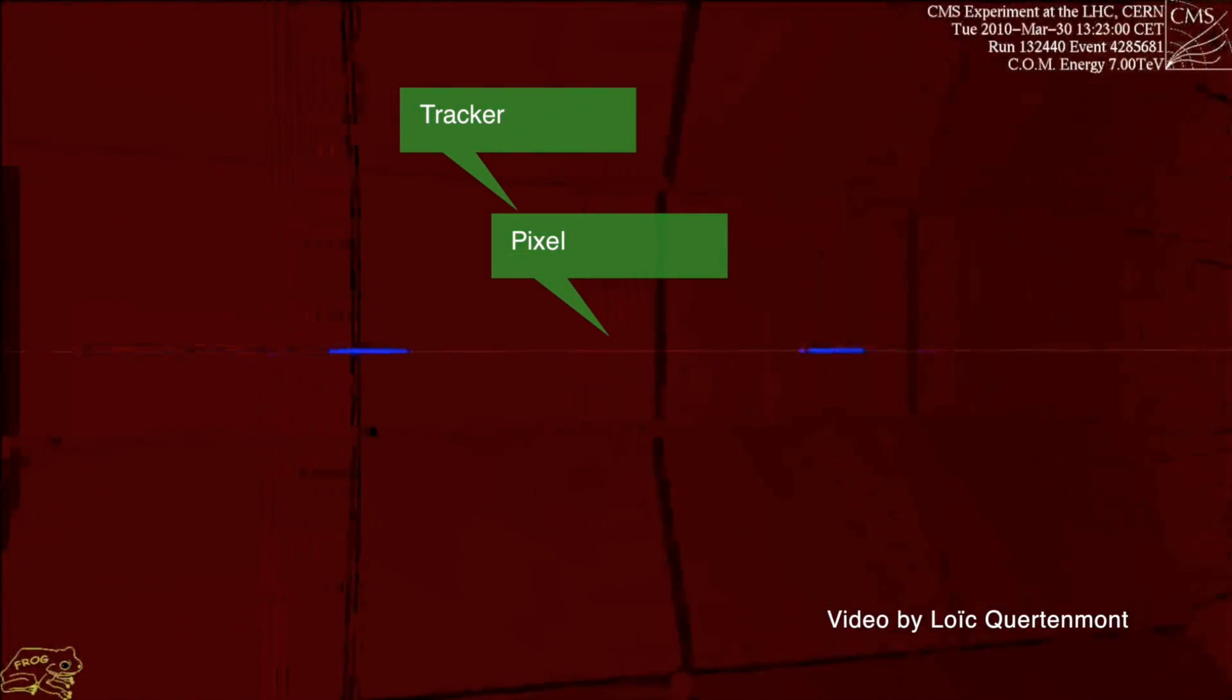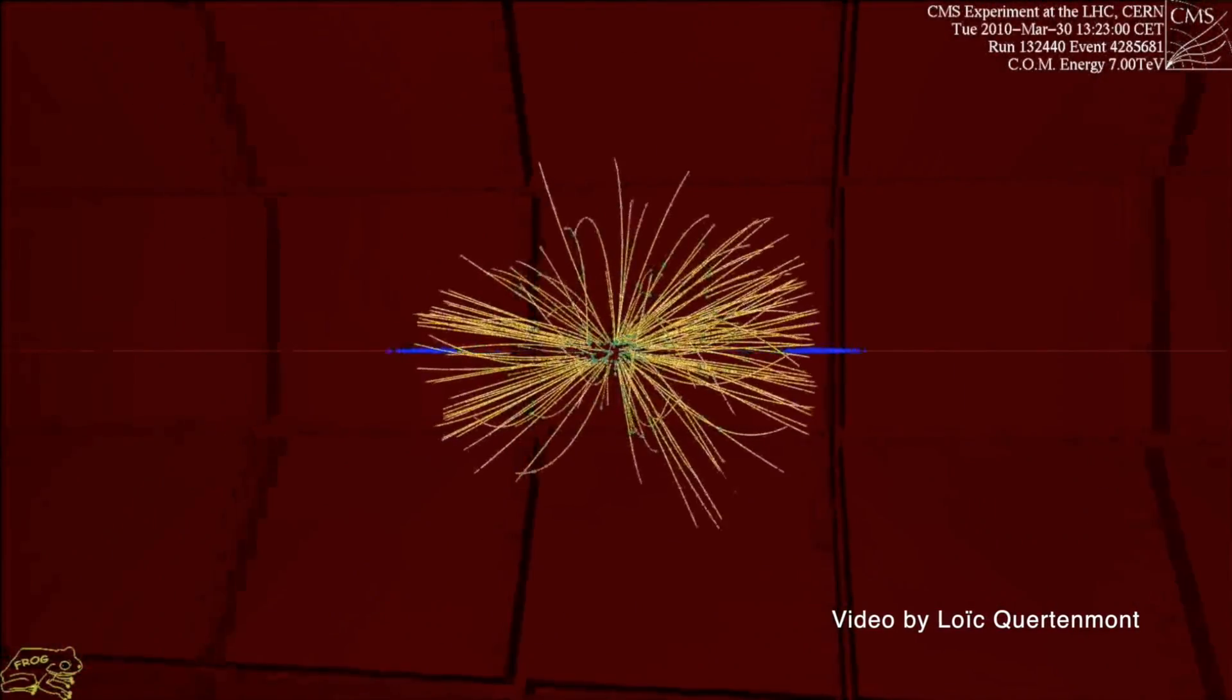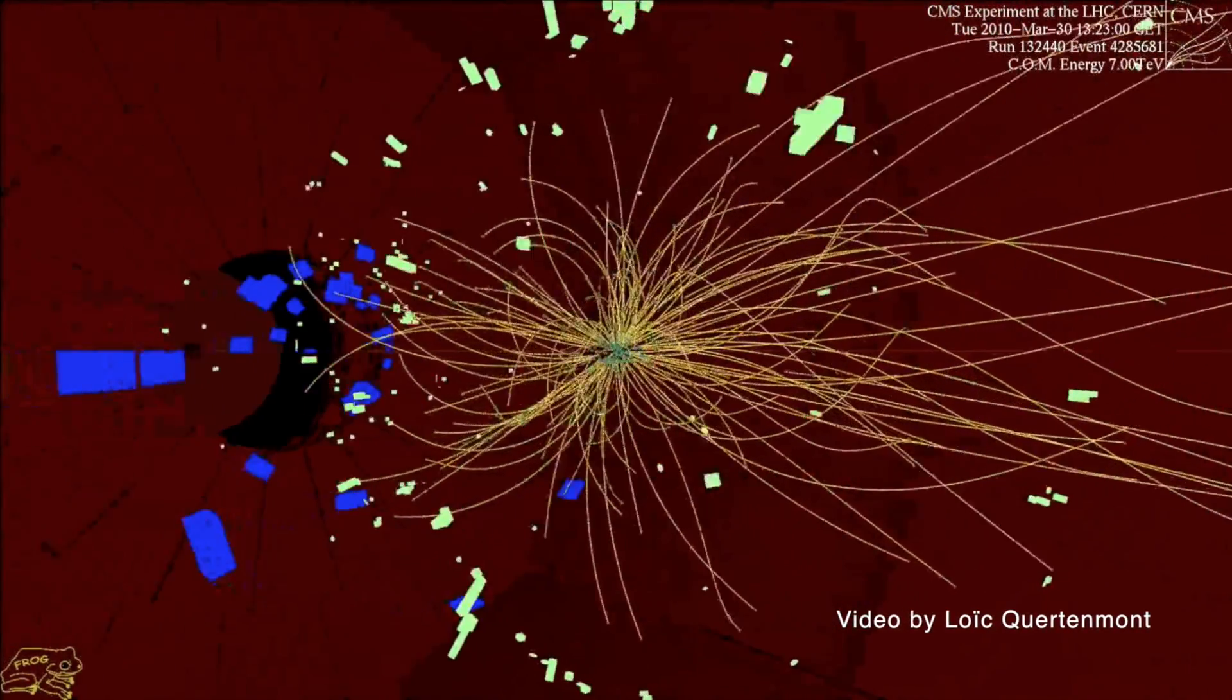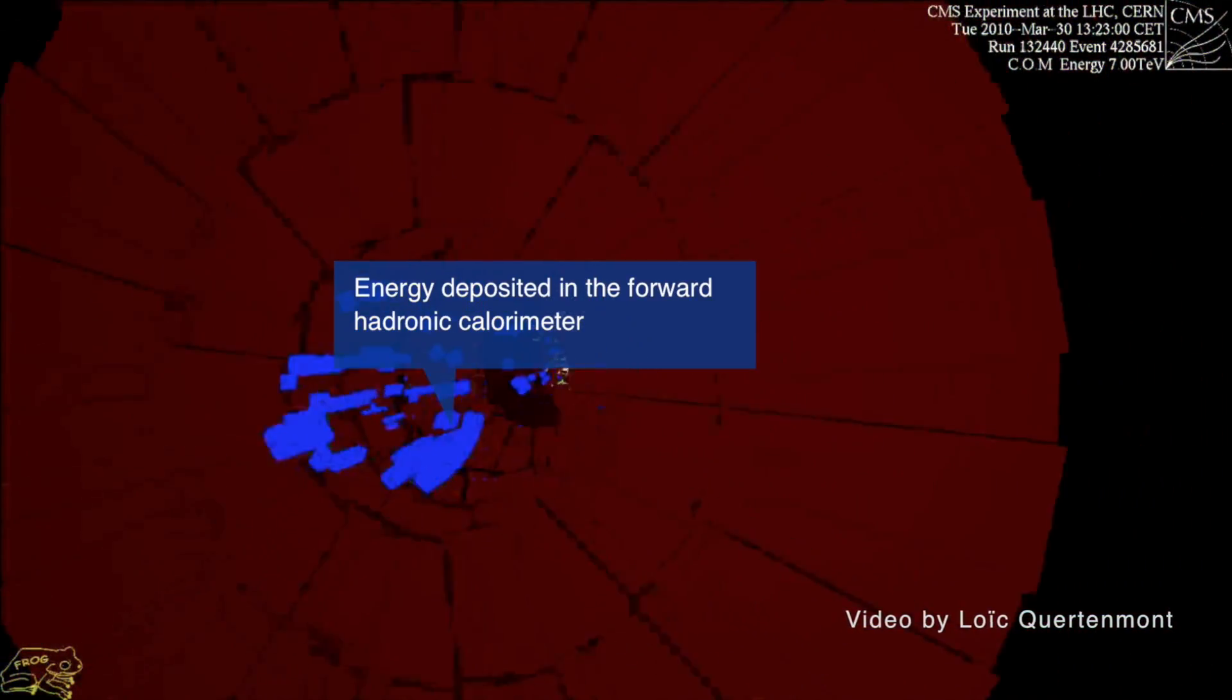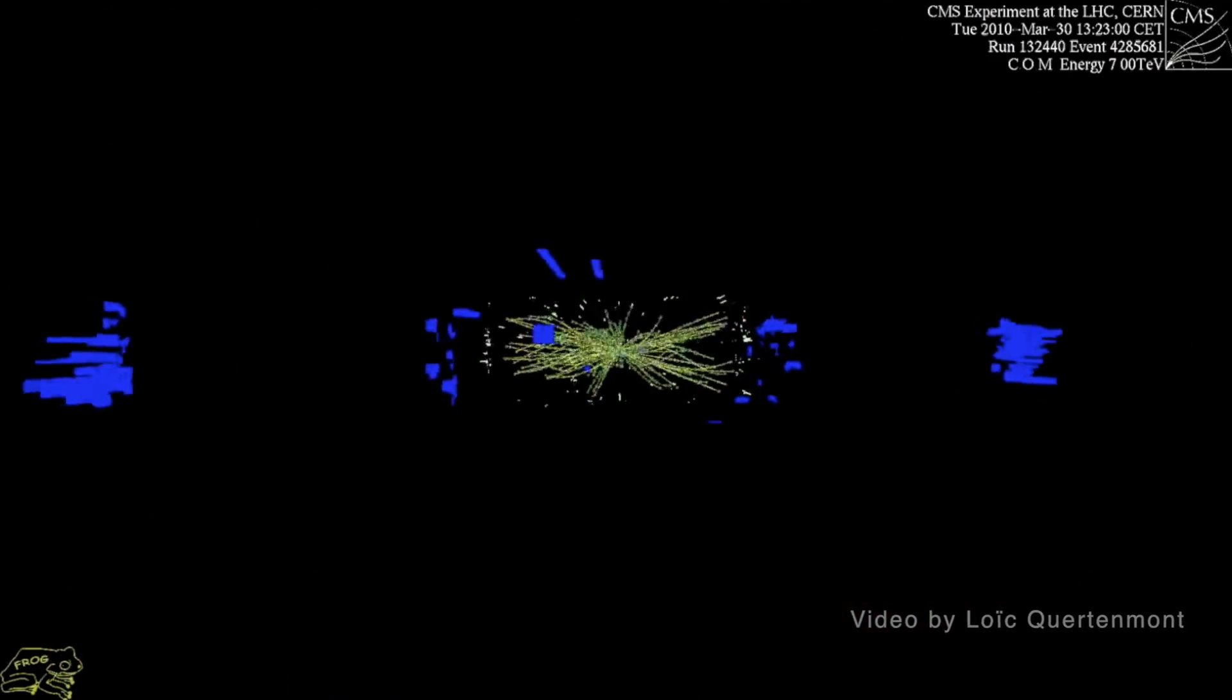And the most popular theory that would predict something that could be WIMP-like was supersymmetry. Supersymmetry is not entirely ruled out, but my understanding is that the theoretical models have to strain a little bit to still allow WIMPs.